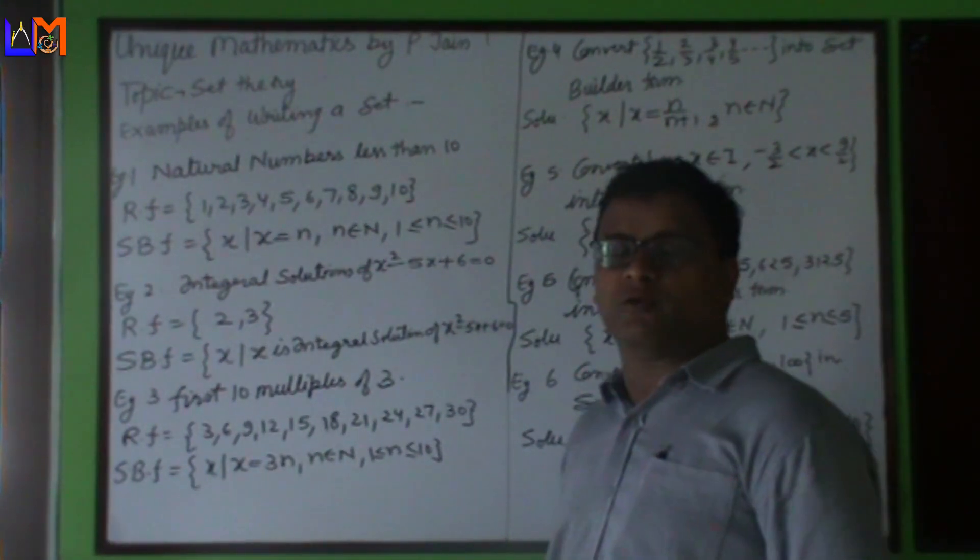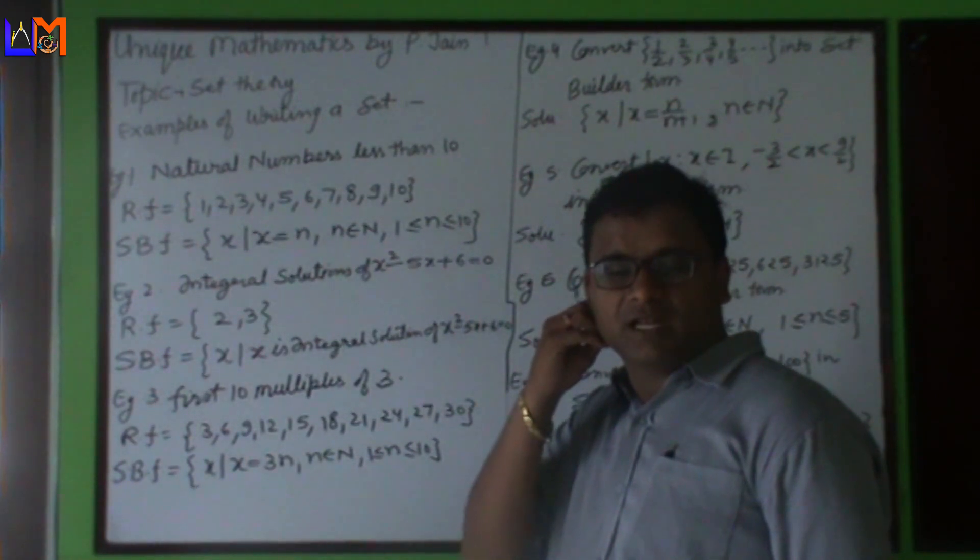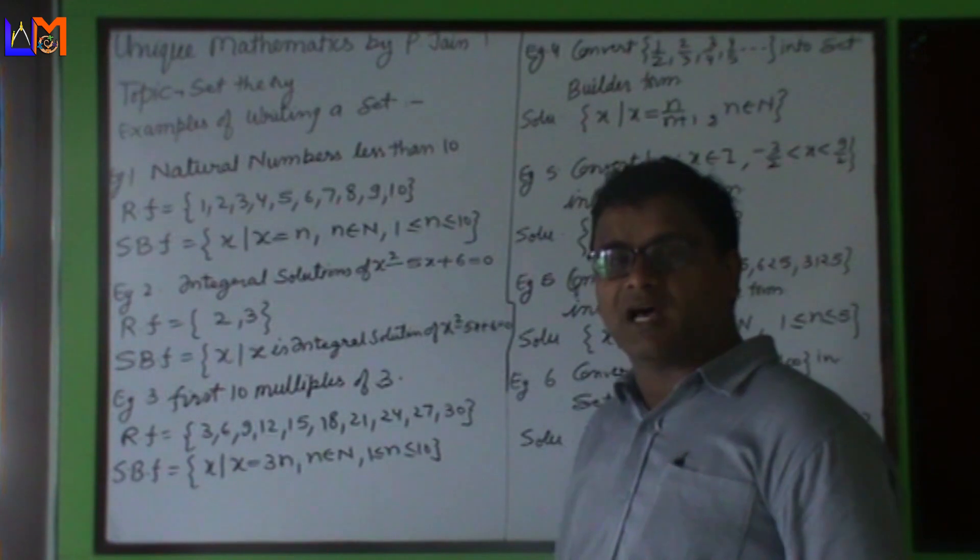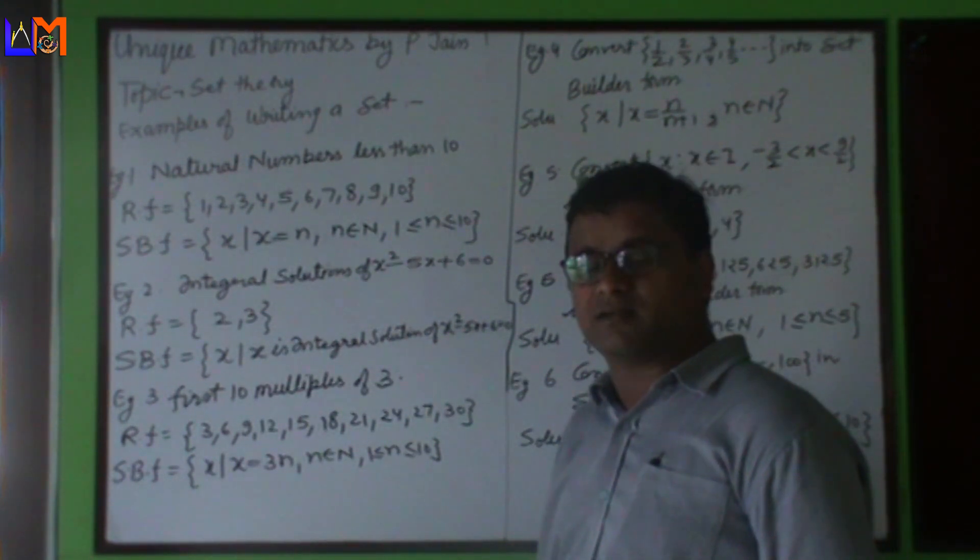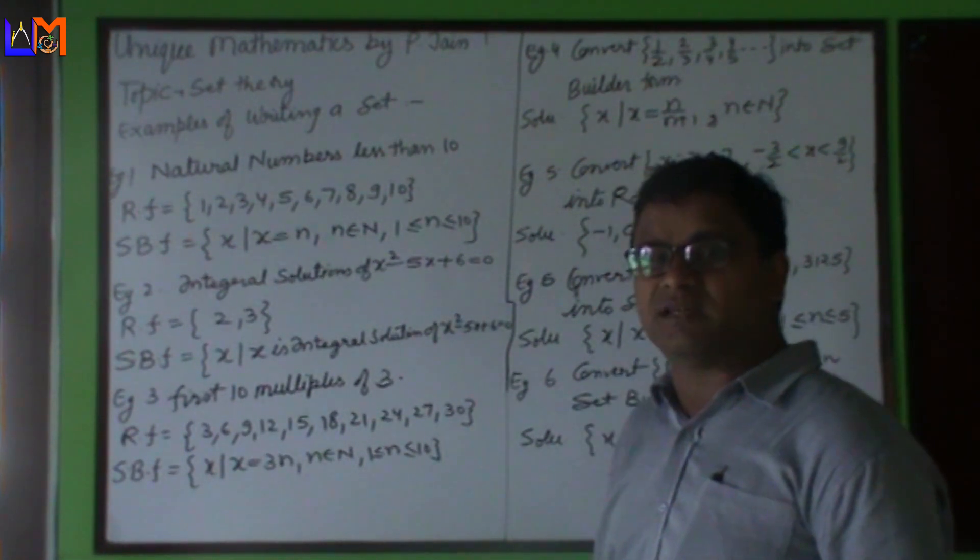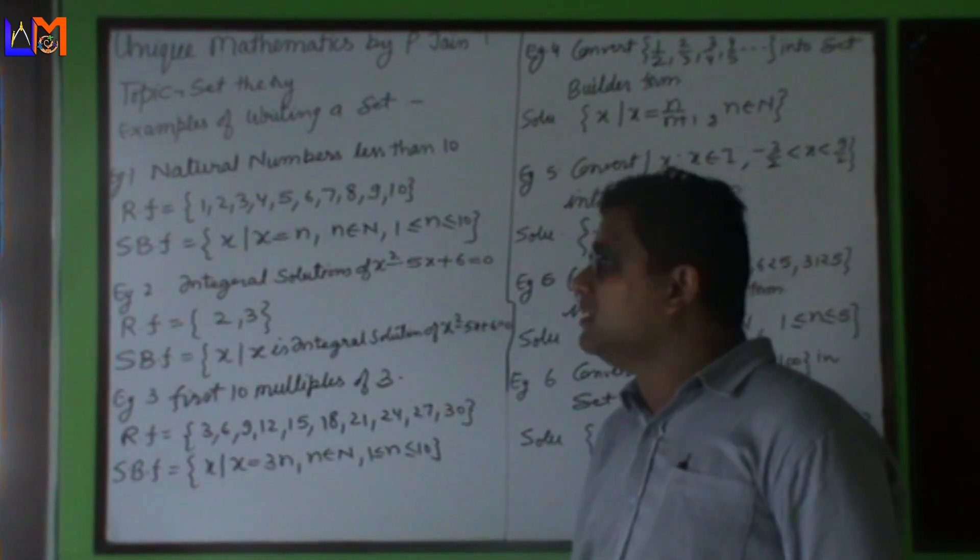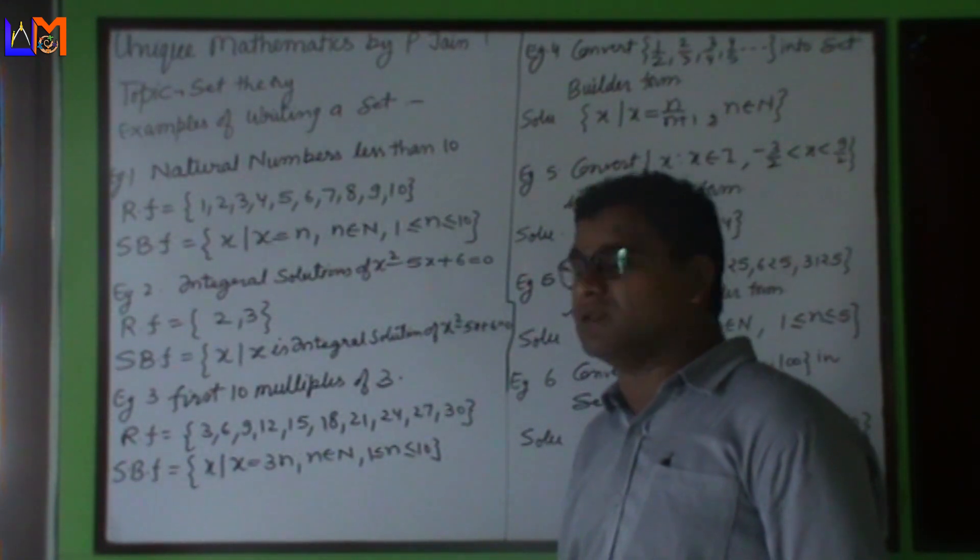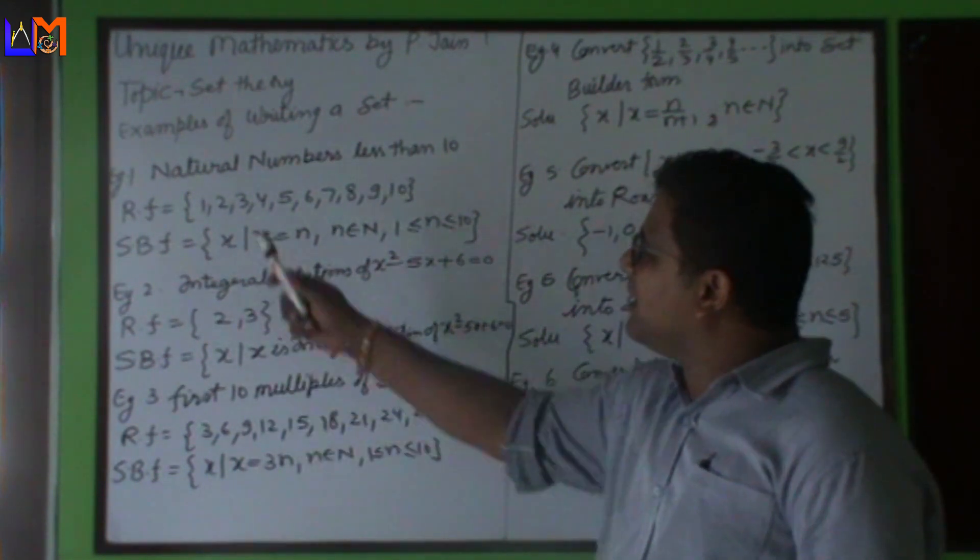Hello friends, welcome to my YouTube channel Unique Mathematics by PJ. Today we are continuing the same chapter where we left in our last video. In our last video we have learned about the methods of writing a set. We learned we can write the set in two methods: roster form and set builder form. So here we will take some examples to understand the two methods in a better way.